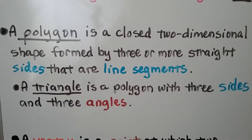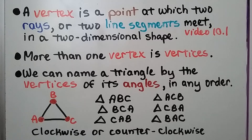A polygon is a closed two-dimensional shape formed by three or more straight sides that are line segments. A triangle is a polygon with three sides and three angles. A vertex is a point at which two rays or two line segments meet in a two-dimensional shape — we learned about that in 10.1. More than one vertex is called vertices.